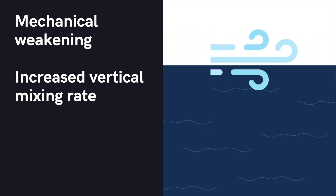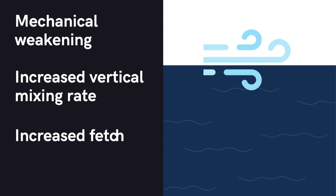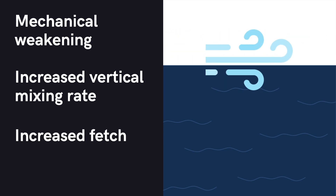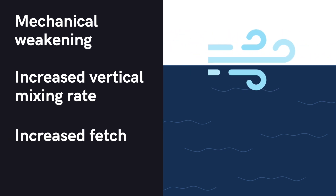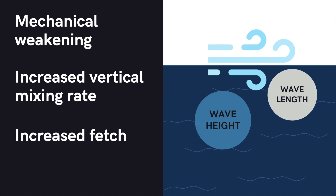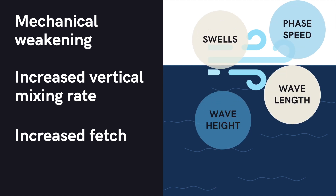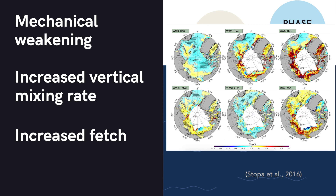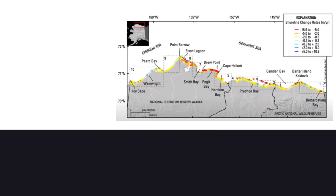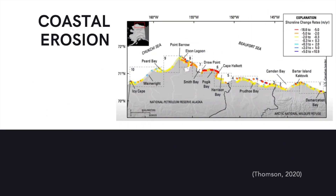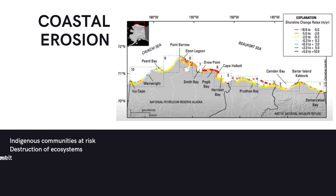The reduced ice cover is also increasing the fetch. It has been found that the reduction of sea ice cover from 1992 to 2014 has caused wave height, wavelength, wave phase speeds, and frequency of swells to increase. That may sound scary enough, but it doesn't end there. The more aggressive ocean is contributing to significant coastal erosion of an average one to two meters per year in the Arctic region. This can pose a serious threat to indigenous communities, ecosystems, and the thawing of permafrost.